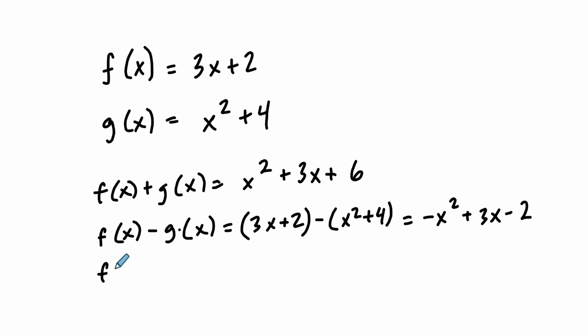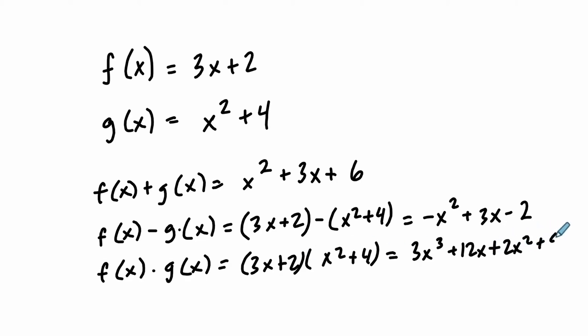And I'll show two more. f of x times g of x, you would multiply these functions. So you distribute the first binomial by the second. So you get 3x times x squared, which would be 3x cubed. 3x times 4 would be 12x. 2 times x squared would be 2x squared. And 2 times 4 would be 8. Simplify if you can. In descending order, 3x cubed plus 2x squared plus 12x plus 8.